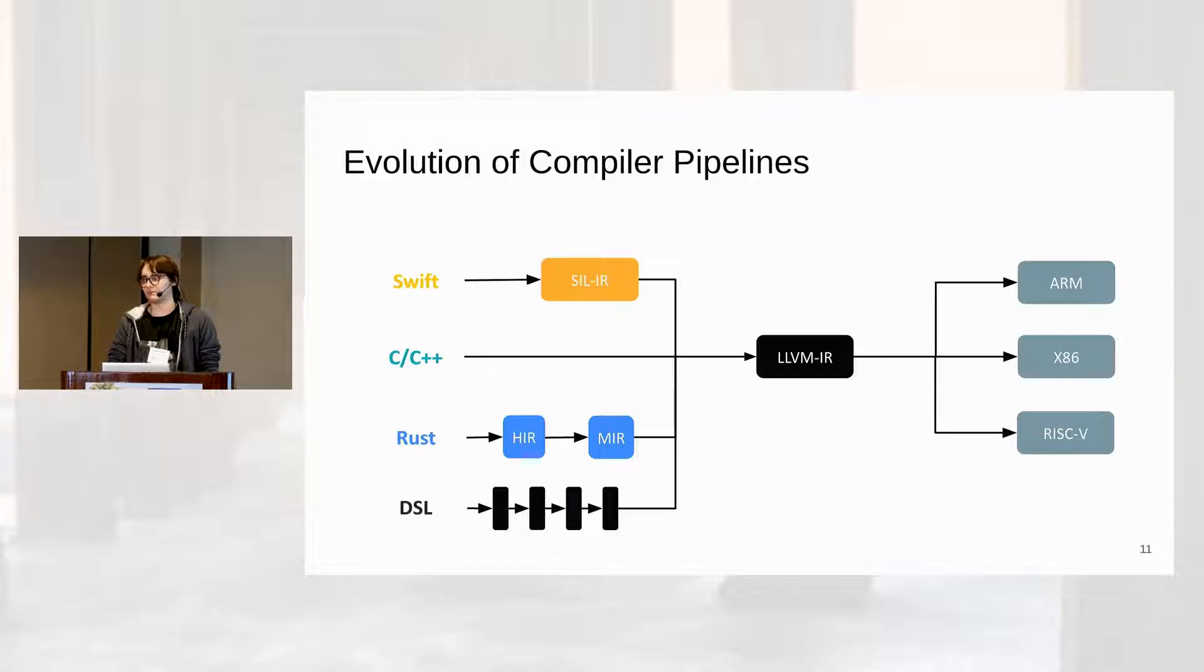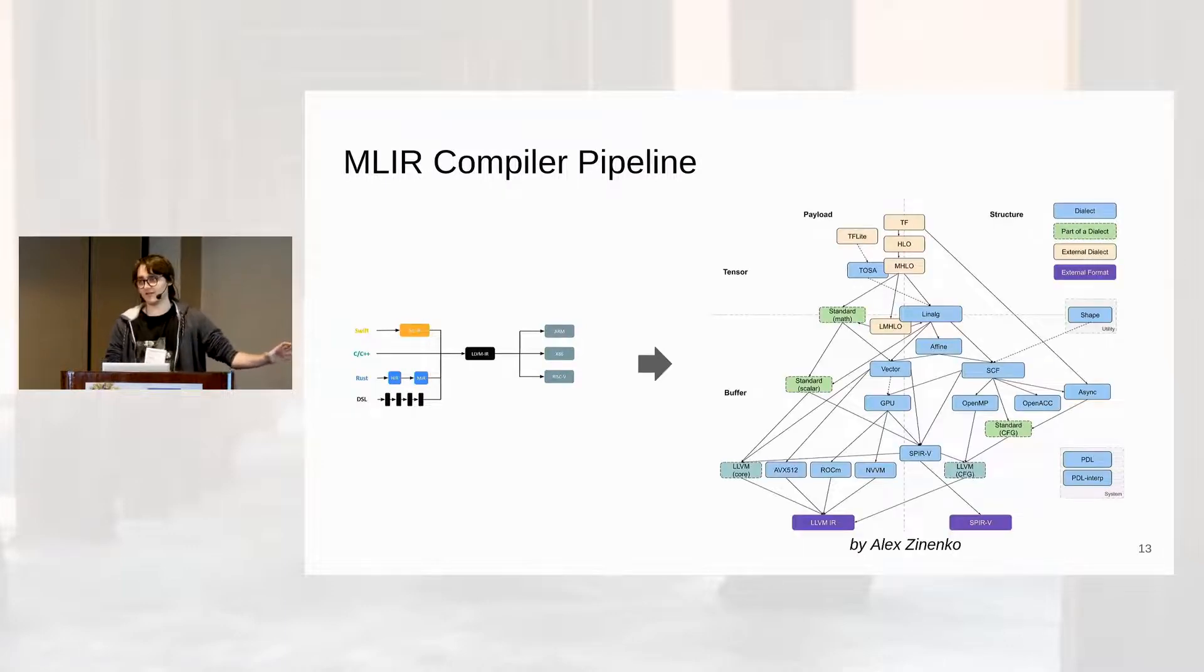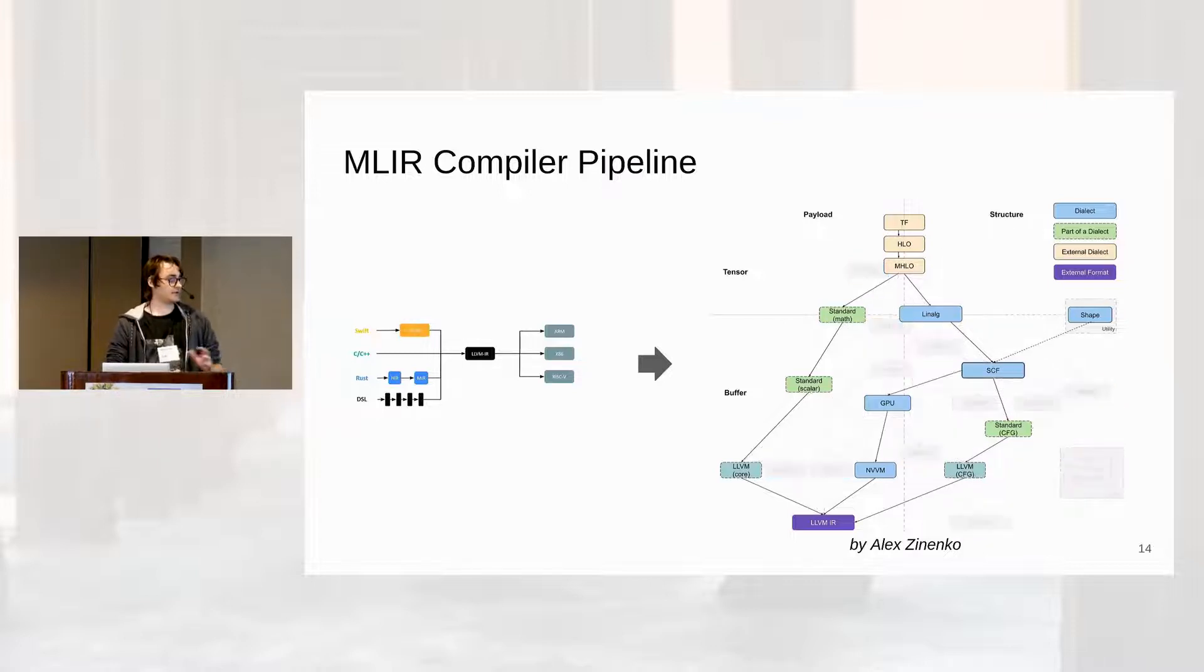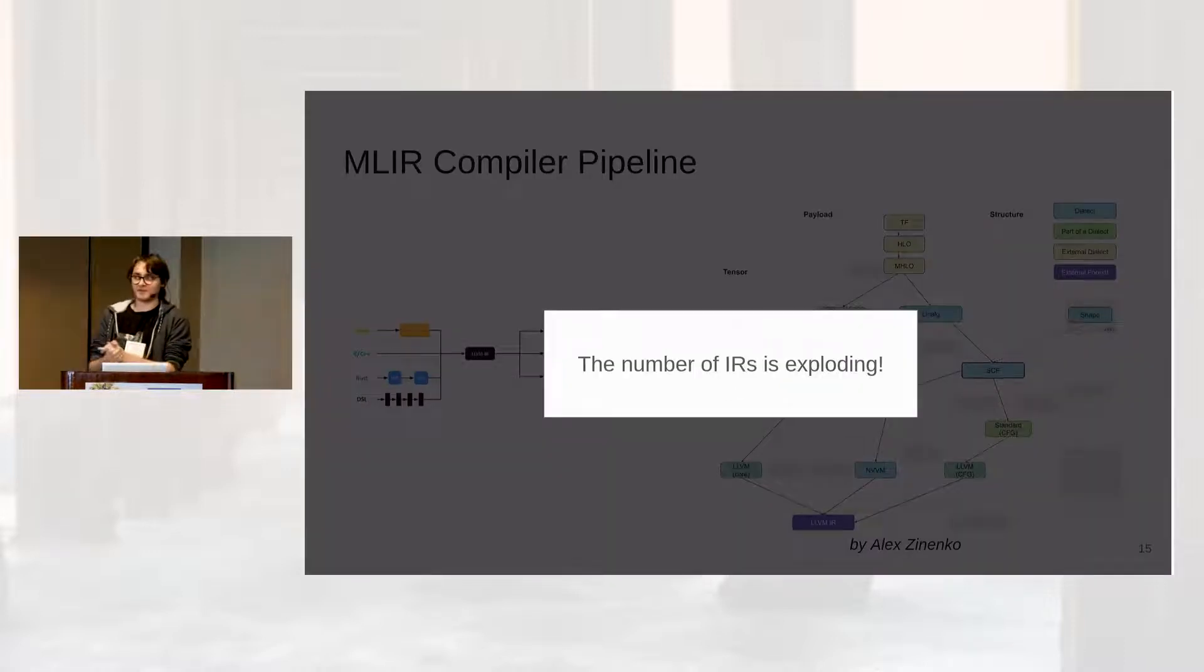If we're now looking at MLIR, which is a new compiler framework under the LLVM umbrella, this kind of looks like this. Instead of having this linear pipeline, you have a huge DAG of intermediate representations going from linear algebra down to LLVM IR, or you could also have a RISC-V intermediate representation. The number of intermediate representations and also their size is currently exploding, and the importance of intermediate representations is getting bigger and bigger in compilers.